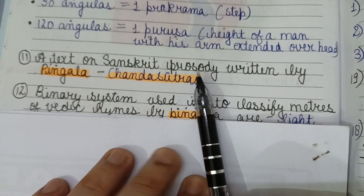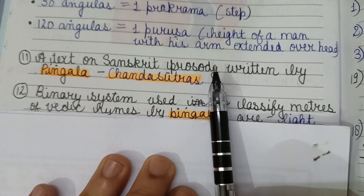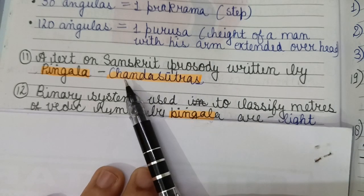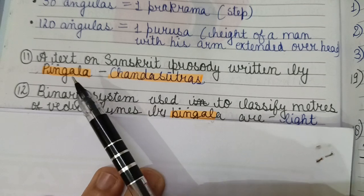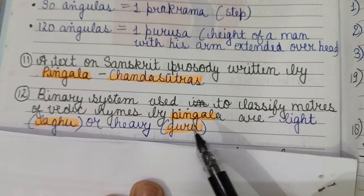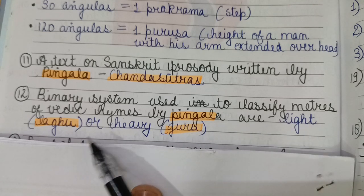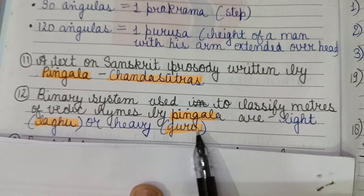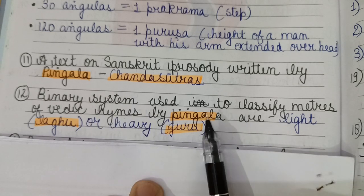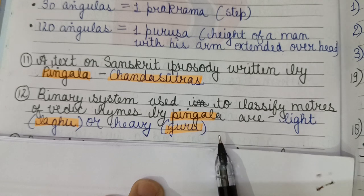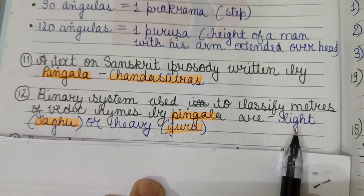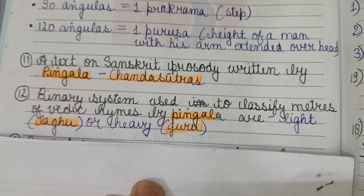A text on Sanskrit prosody written by Pingala is the Chandrasutras. Pingala used a binary system to classify meters of Vedic hymns as light (laghu) and heavy (guru) — corresponding to what we know today as 0 and 1.